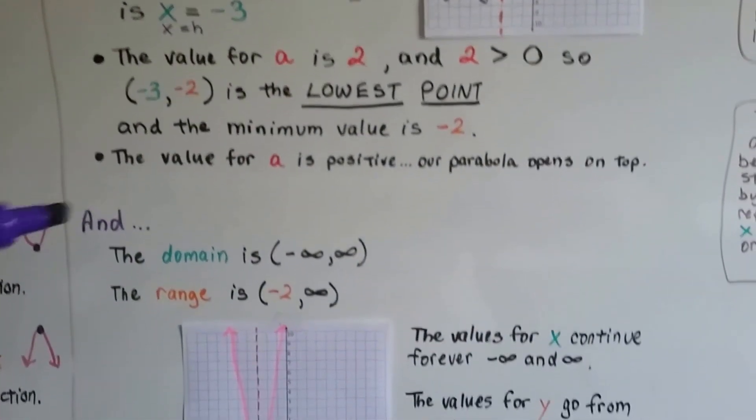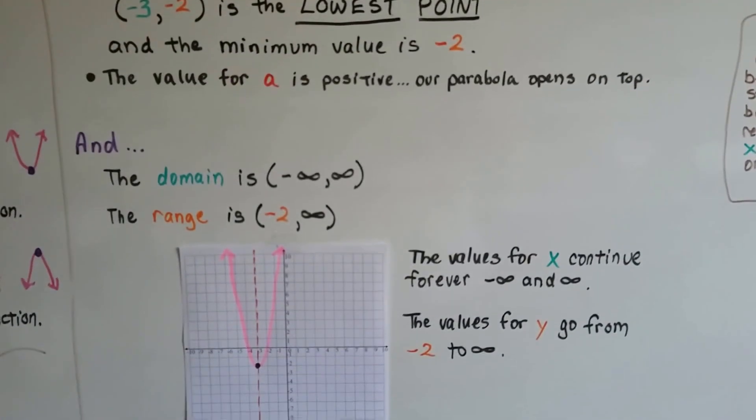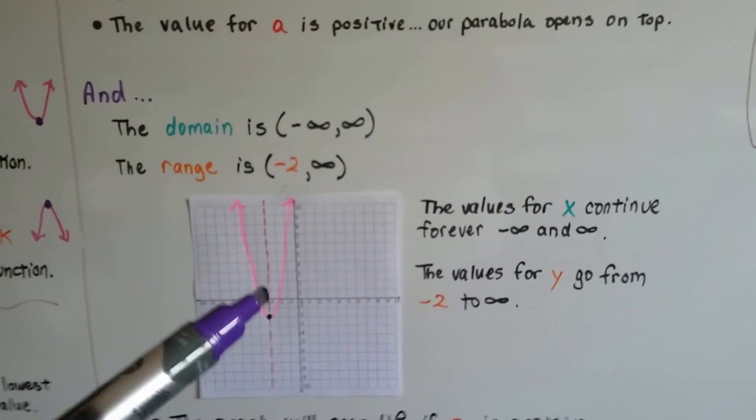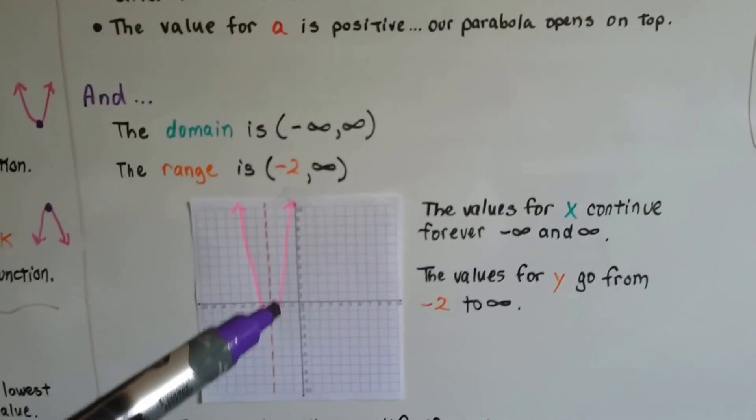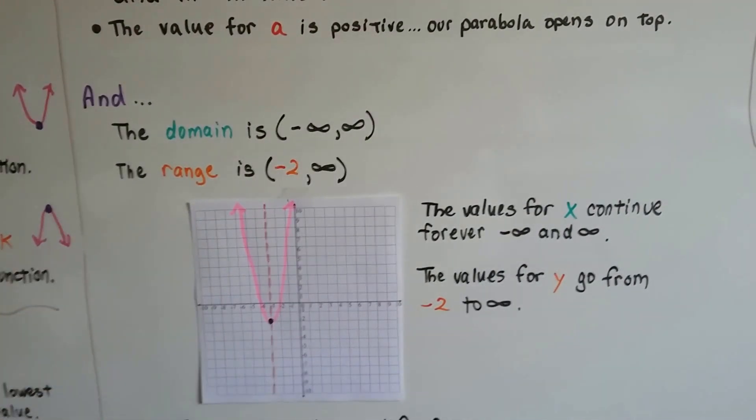Our domain is (-∞, ∞), because the values for x continue forever into negative infinity and positive infinity.